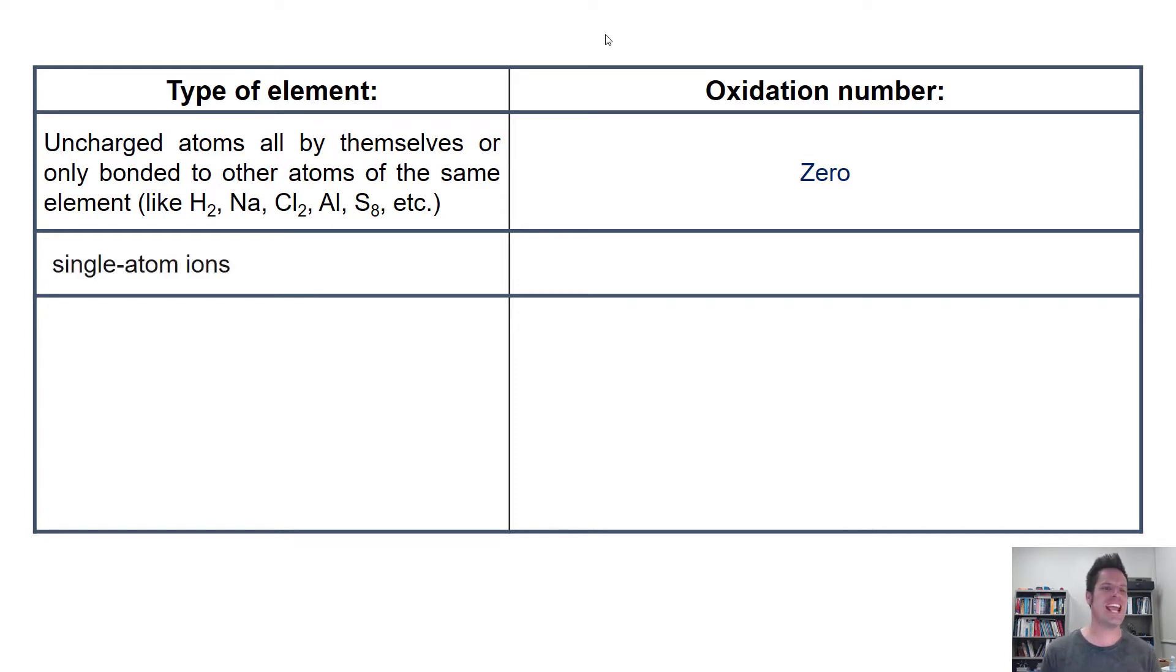Separately, any time you see a single atom ion, that is an atom that's all by itself with a charge, such as K+, S2-, Mg2+, and so forth, the oxidation number for that single atom is equal to its charge.